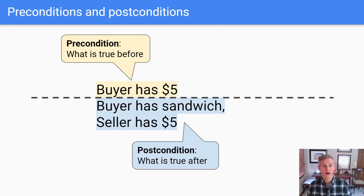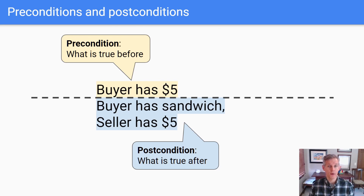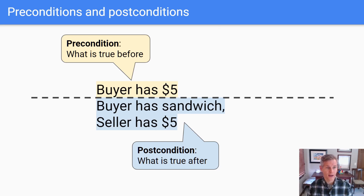The caller of a contract is responsible for the precondition — what is true before. Here, the precondition is that the buyer has the money. The implementer of the contract is responsible for the postcondition. Here, the postcondition is that the seller has the money and the buyer has the sandwich.